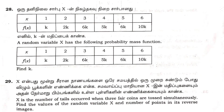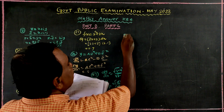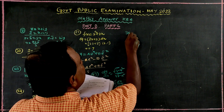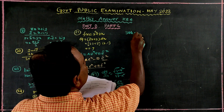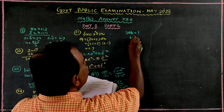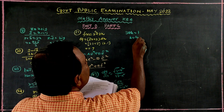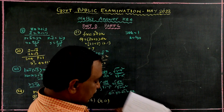Problem number 28: we need to find the k value using the probability mass function table. Using the formula sigma f of x equals 1, adding all values gives 30k equals 1, so k value is equal to 1 divided by 30.